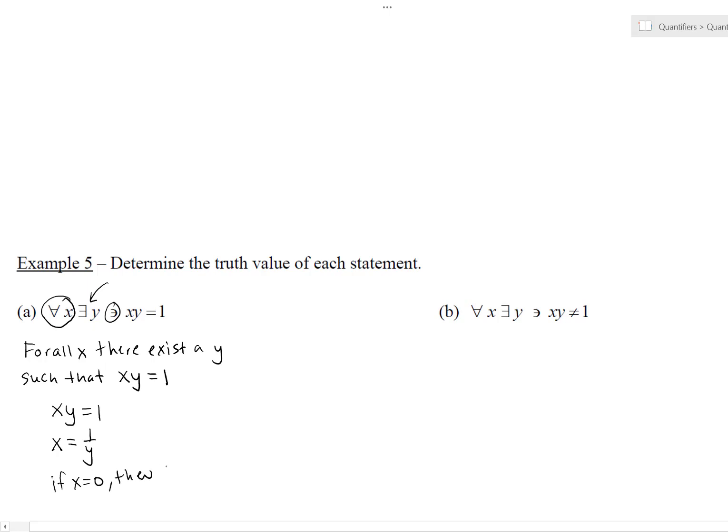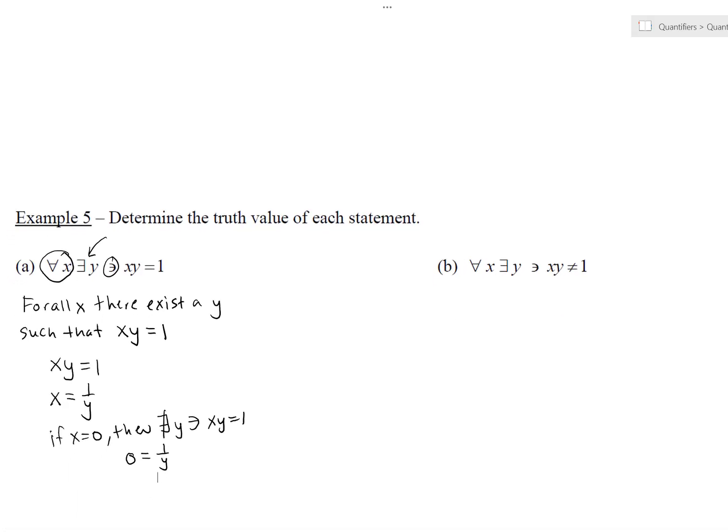If you just set X equal to one over Y, then there is... to answer this, the truth value, it's false because it's not true for all X, except when X is zero.